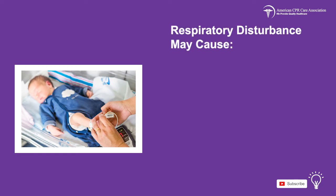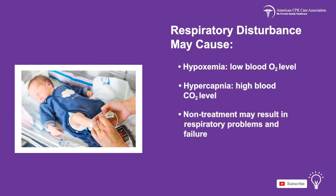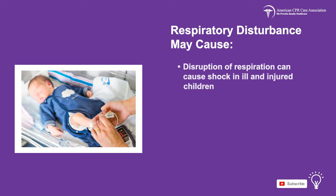Such a disruption may cause hypoxemia, which is a low blood oxygen level, or hypercapnia, which is a high blood carbon dioxide level. If a child suffering from either of these conditions does not get proper attention, this may result in respiratory problems and failure. Because of this, it's crucial to recognize symptoms and signs of respiratory problems and shock in all ill or injured children.